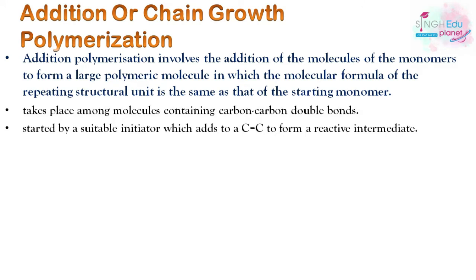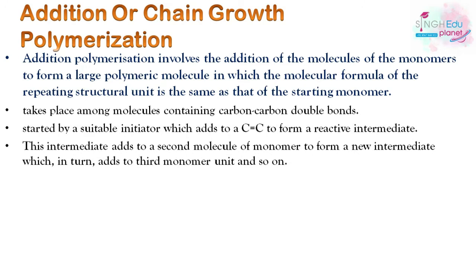The process is started by a suitable initiator, which adds to a carbon-carbon double bond to form a reactive intermediate. This intermediate then adds to a second molecule of monomer, and the new intermediate adds to a third molecule of monomer, and so the chain grows in this way.